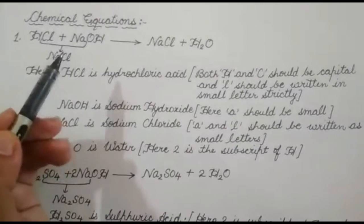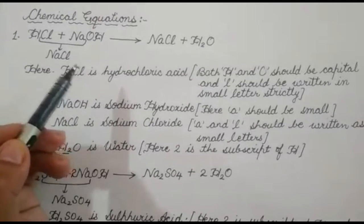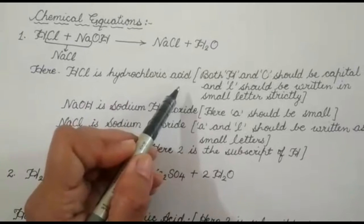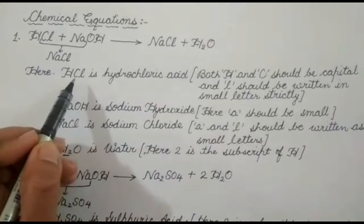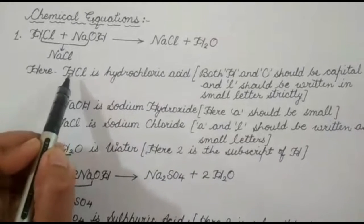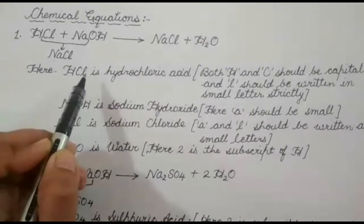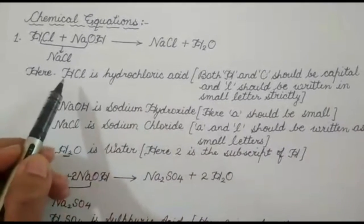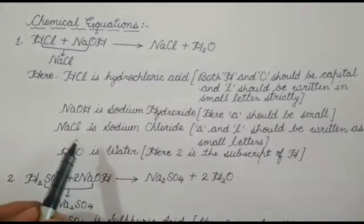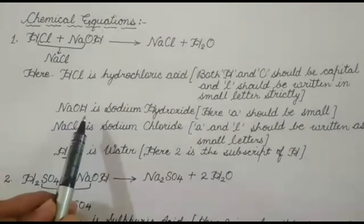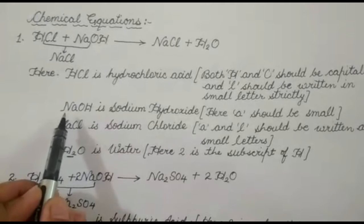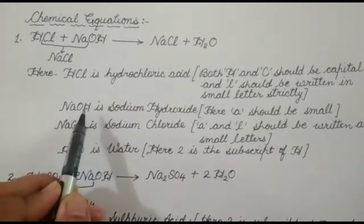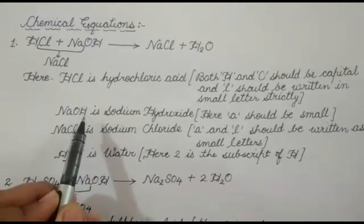First of all, HCl is hydrochloric acid. While writing the formula for hydrochloric acid, you need to write H and C in capital letters, and L should be written as a small letter. In the same way, for sodium hydroxide, when writing its chemical formula, N should be capital and A should be small. For hydroxide, O and H both should be capital.